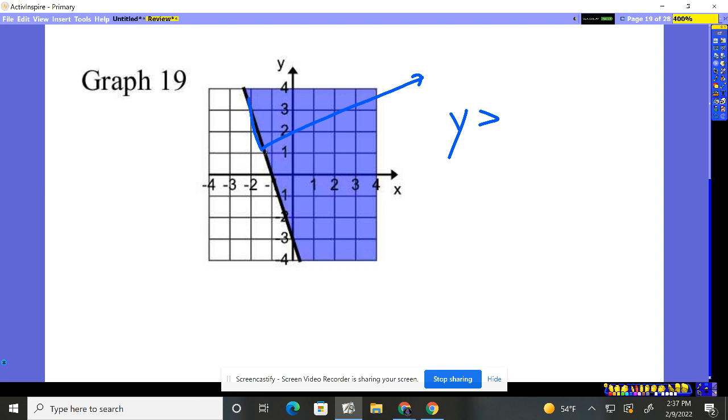The line is solid. That means the points on it are solutions. So I need to put the or equal to.